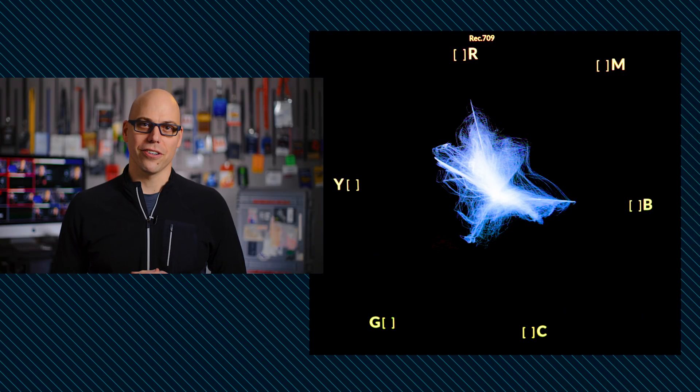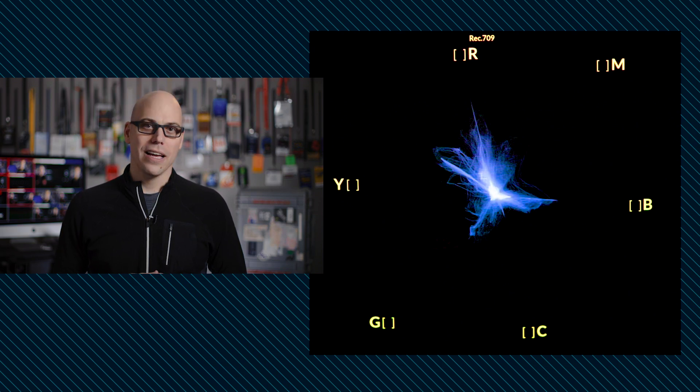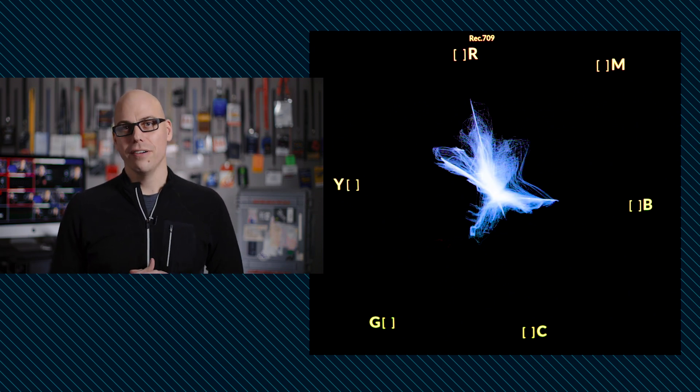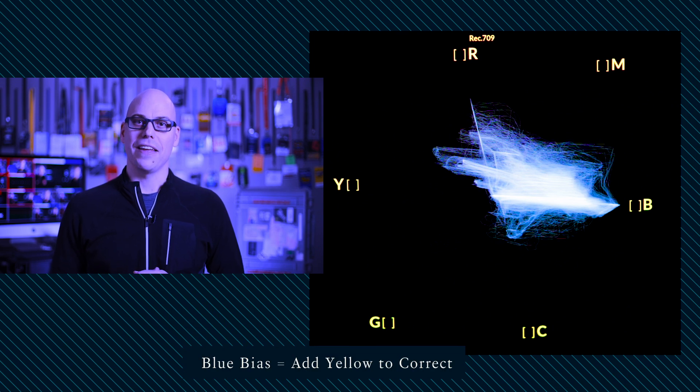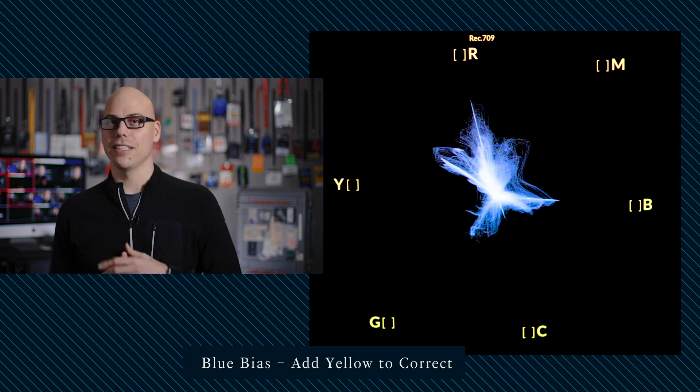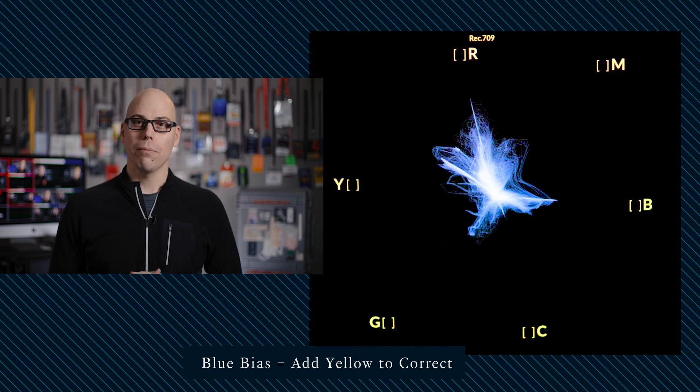If the trace is offset from the center, the vectorscope is showing that there is a bias towards a particular color, and that it can be corrected by adding the color that is on the opposite side of the color wheel, or by reducing the color towards which the trace is pointing.